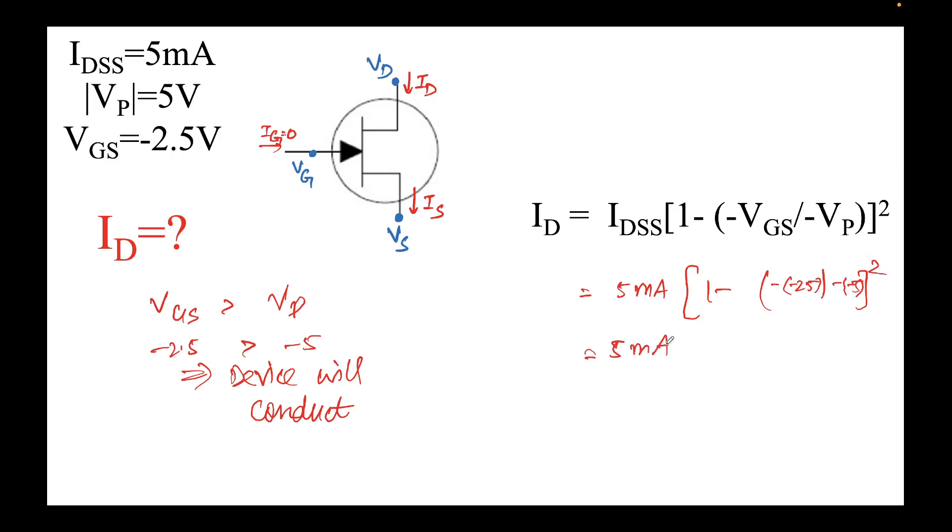This will come out to be 5 milliamps times—minus times minus will become plus—so that will be 2.5 upon 5 whole square. That will be 5 milliamps times 1 minus one-half whole square.